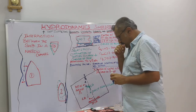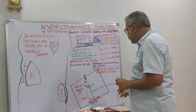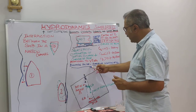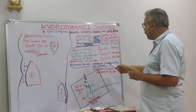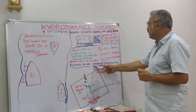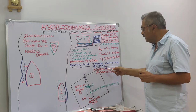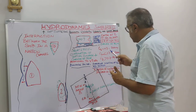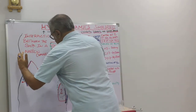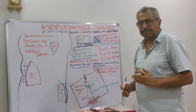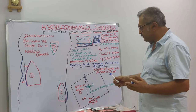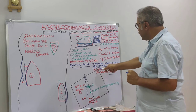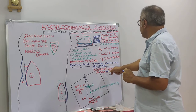Another factor we cannot undermine is the blockage factor. The blockage factor is the immersed cross-section of the vessel's midship section divided by the cross-section of the water in the canal or river. This factor describes how much the channel is restricted.